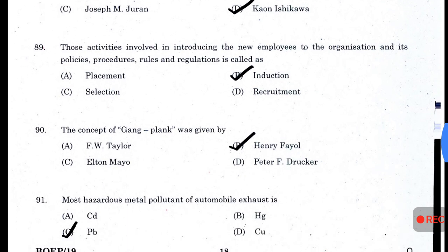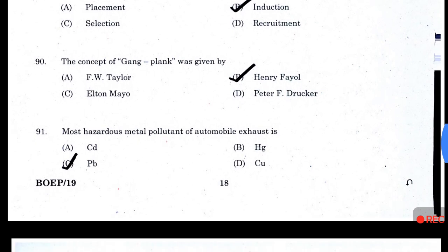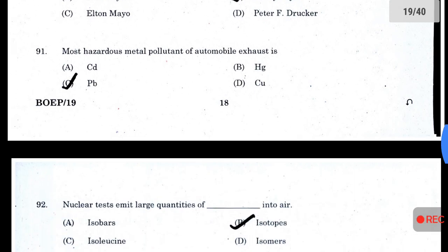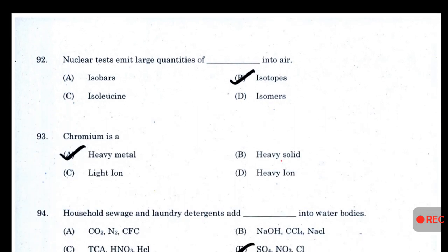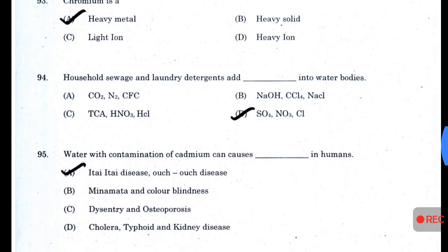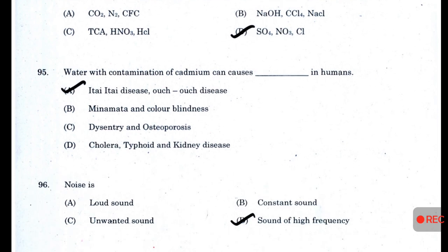Those activities involved in introducing a new employee to the organization and its policies, procedures, rules, and regulations are called induction. The concept of gangplank was given by Henry Fayol. The most hazardous metal pollutant in automobile exhaust is Pb. Nuclear tests emit large quantities of isotopes into the air. Chromium is a heavy metal. Household sewage and laundry detergents add SO₄, NO₃, and Cl into water bodies. Water contaminated with cadmium can cause itai-itai (ouch-ouch) disease in humans.